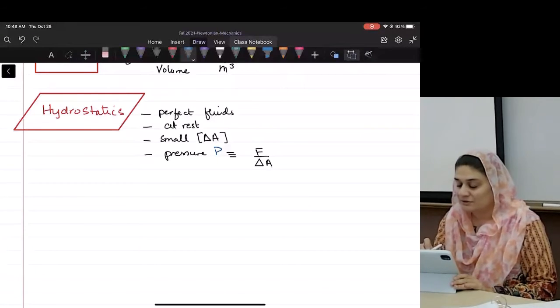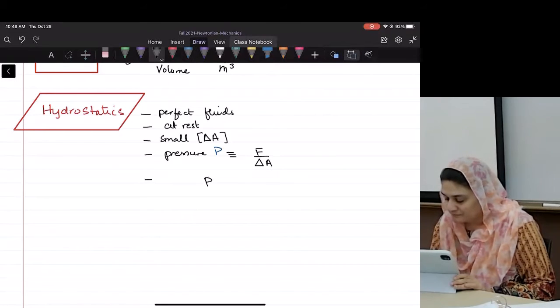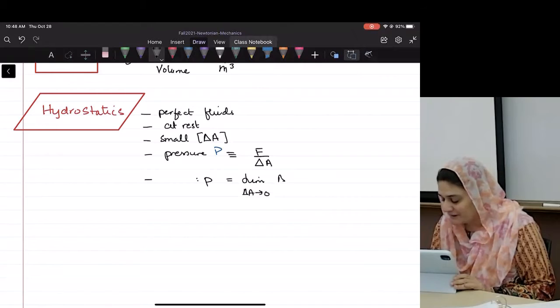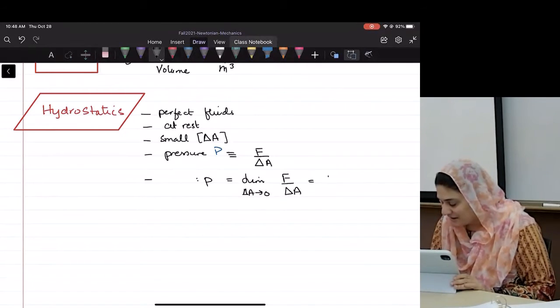Now may I also define the small p change - this is my small p - as limit when delta A goes to zero? May I define F over delta A as F over dA? Yes.